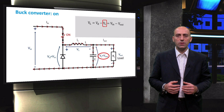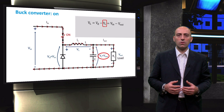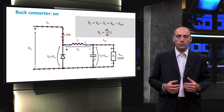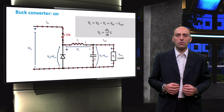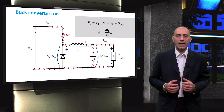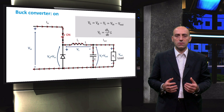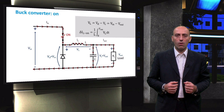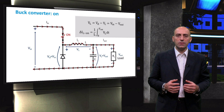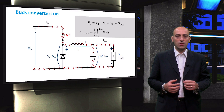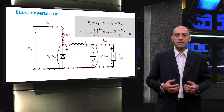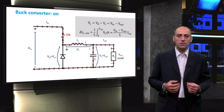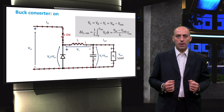In the previous video, we saw that the inductor works according to Lenz's law, for which the time derivative of the current flowing through the coil is linked to the voltage across the inductor via the proportionality factor L, known as the inductance of the coil. Moving from the derivative to the integral form of Lenz's law, the increase of current in the inductor in the ON mode can be written as the difference of the input and output voltage divided by the inductance and multiplied by the duration of the ON time.